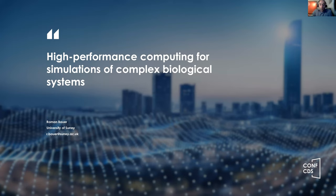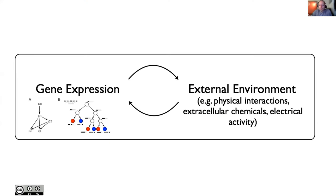This is going to be an interdisciplinary talk about interdisciplinary research. The fundamental principle we are addressing is the interaction between genetic rules as governed by gene expression and the physical interactions of cells. This interaction is very complex because cells behave in certain ways governed by the genetic code, but their behaviors are determined by what they sense — mechanical interactions, extracellular chemicals, and so on. This is too complex for any human to grasp, and that's why we need computers. Often these computer simulations require a lot of computational resources.